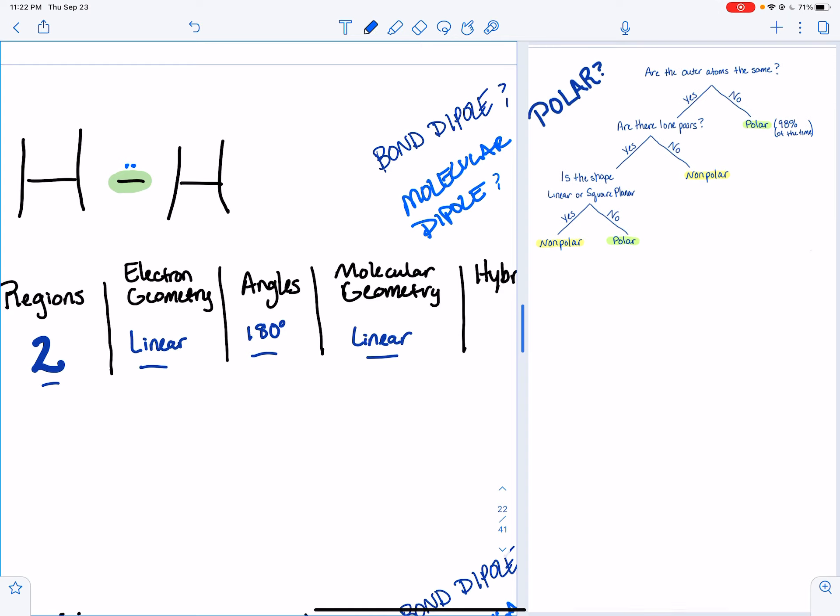Now if we're just looking at it, is there a dipole? Well, that bond is between two identical atoms. So you can't have a dipole when they're identical like that. Is there a molecular dipole? Well, if you don't have a bond dipole, you don't have a molecular dipole.